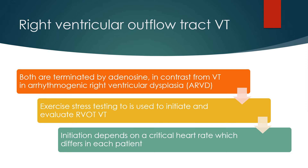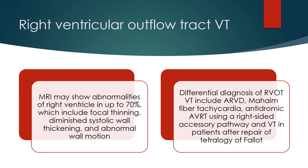Initiation depends on a critical heart rate which differs in each patient. MRI may show abnormalities of the right ventricle in up to 70%, including focal thinning, diminished systolic wall thickening, and abnormal wall motion. Differential diagnosis of RVOT VT includes ARVD, Mahaim fiber tachycardia, antidromic AVRT using a right-sided accessory pathway, and VT in patients after repair of tetralogy of Fallot.